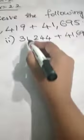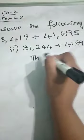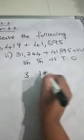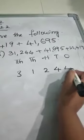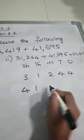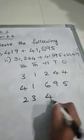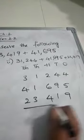Let us see. 10,000, 1000, 100, 10s and 1s. So 31,244, 41,695, 23,419.